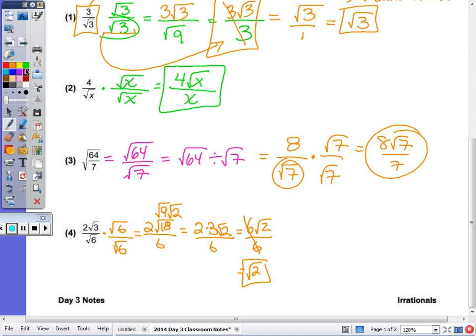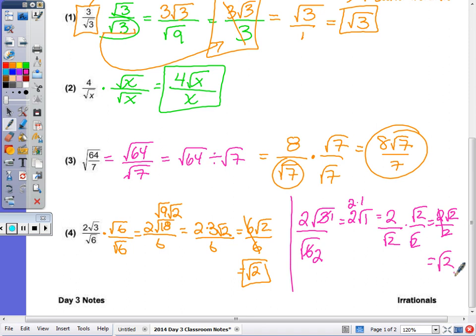Now another way to do that question would be to simplify before we even multiply, as 3 goes into 6 twice, 3 goes into 3 once. So this really becomes 2 radical 1, which is 2 times 1, or 2, all over radical 2. So now when we rationalize it, multiplying by radical 2 over radical 2, we get 2 radical 2 over 2. We can cancel and we get the same answer. So there's going to be more than one way to do these problems. You just need to do the way that feels most comfortable to you.